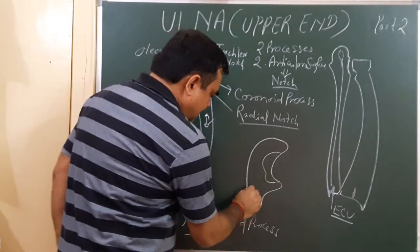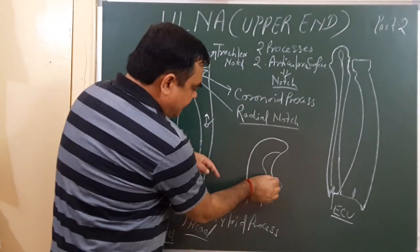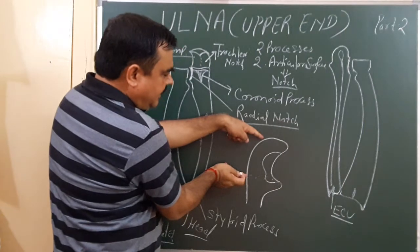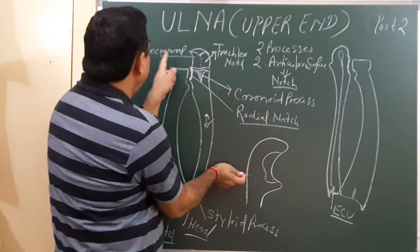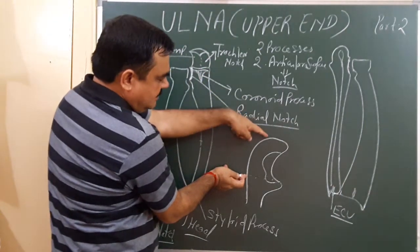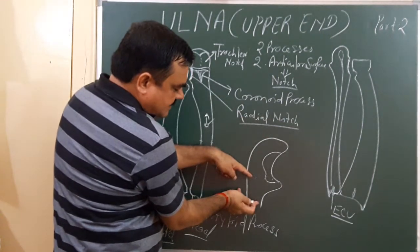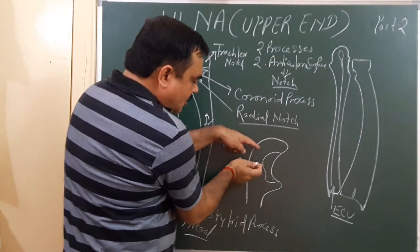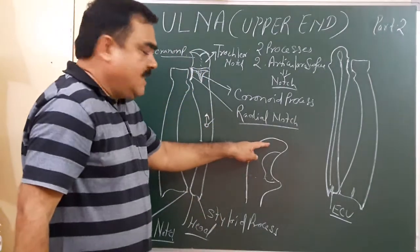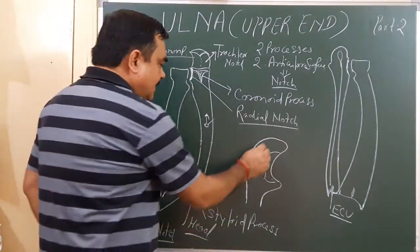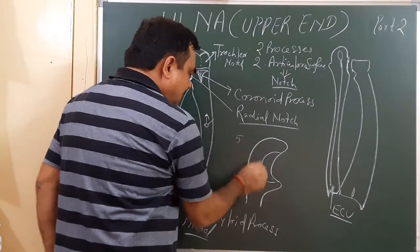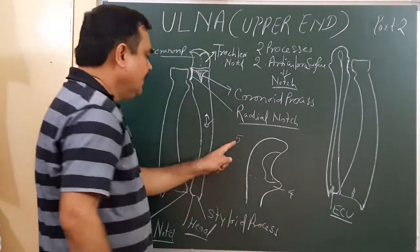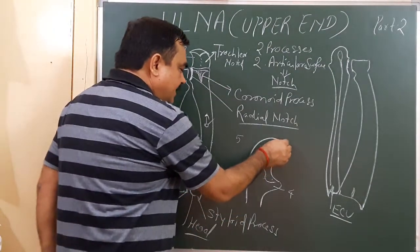This is the olecranon process, and this part is the coronoid process. The olecranon process has five surfaces, and the coronoid process has four surfaces.